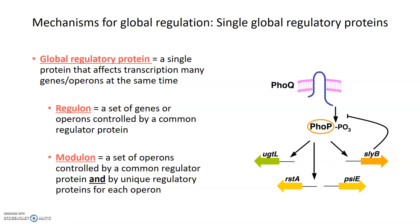There is a more complex organization called a modulon, which is a set of operons controlled by a common regulator protein, but where each operon also has its own unique regulatory machinery. So while a regulon has only one protein affecting all genes, a modulon would have the FoxP protein as well as several individual regulator proteins for each gene. Modulons are technically more regulated than a regulon.